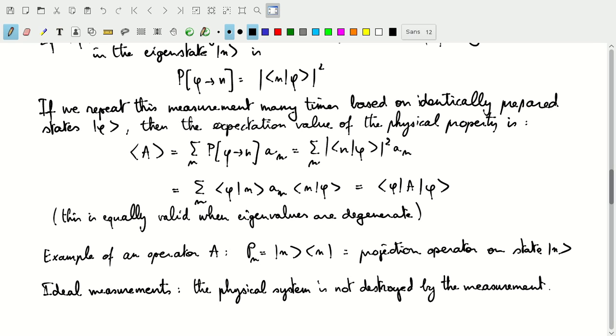Our projection operator on the state n is going to be given by our ket n bra n outer product. And so, that operator is one of the Hermitian operators that will give us a measurement.